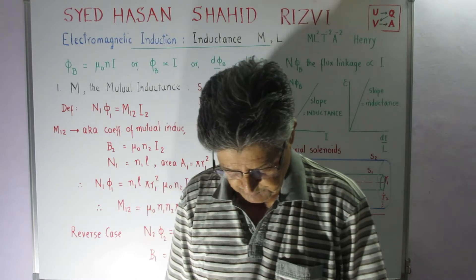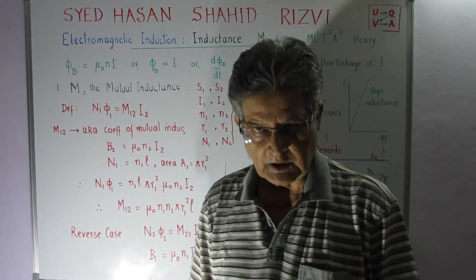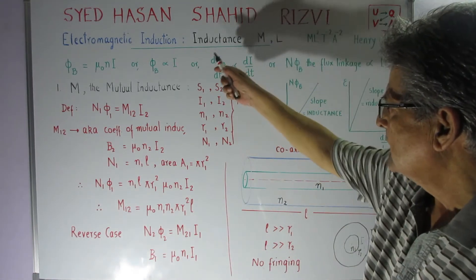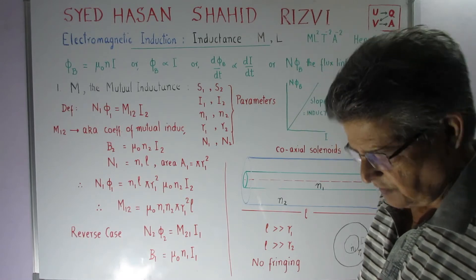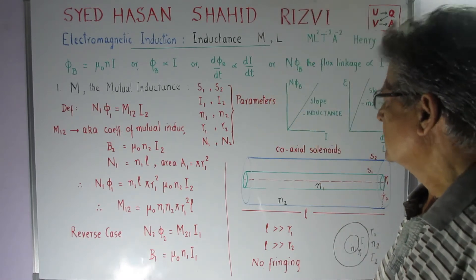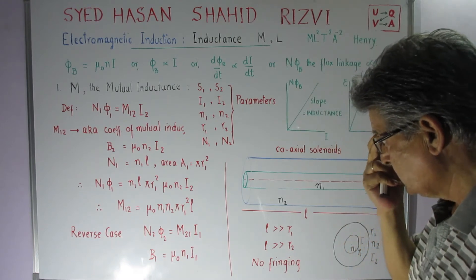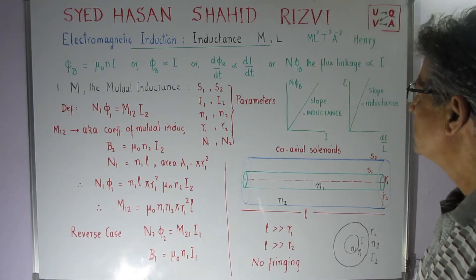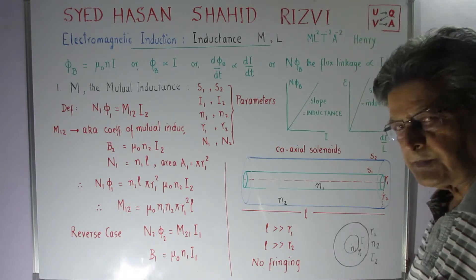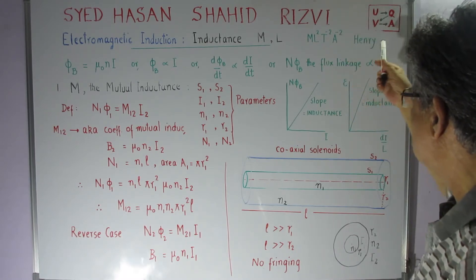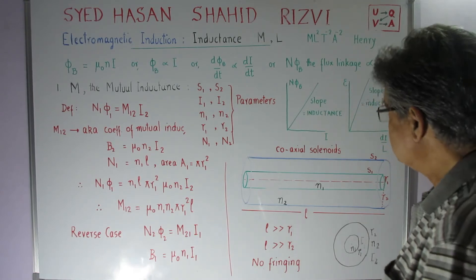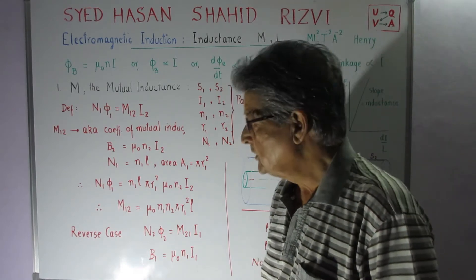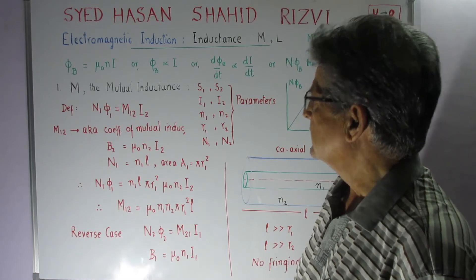Welcome back. Today, in continuation of what we have done in the last three lectures, we are going to talk about inductance, which is of two types: mutual inductance and self inductance. Inductance has dimensions ML²T⁻² per ampere squared, and is called Henry, in honor of Joseph Henry, the American physicist. Whether it is mutual inductance or self inductance, the unit of inductance is Henry.